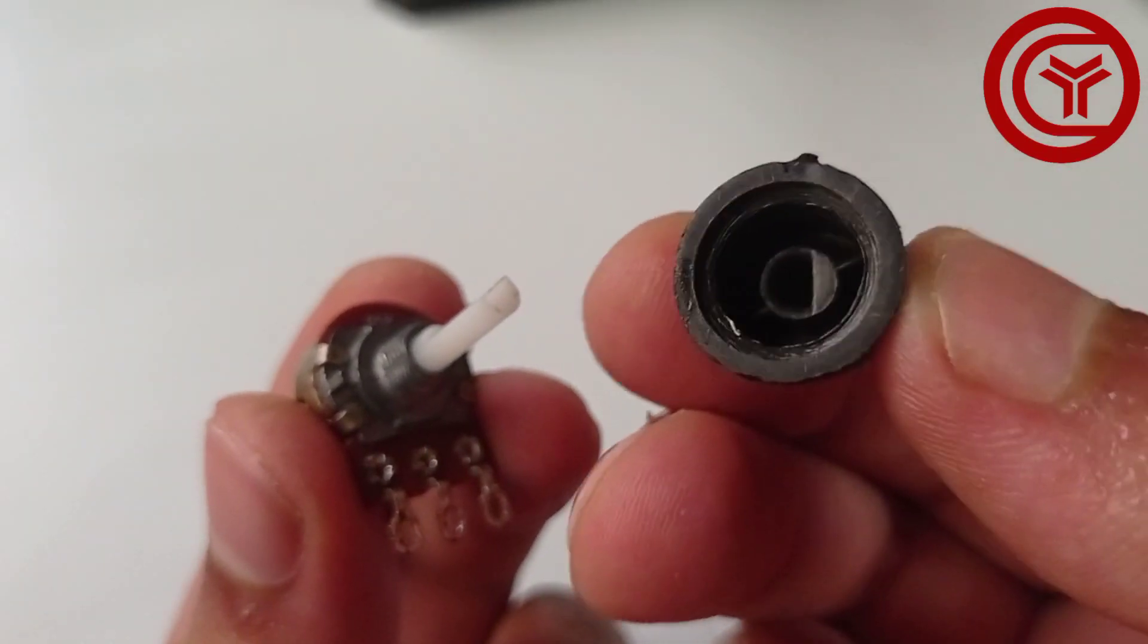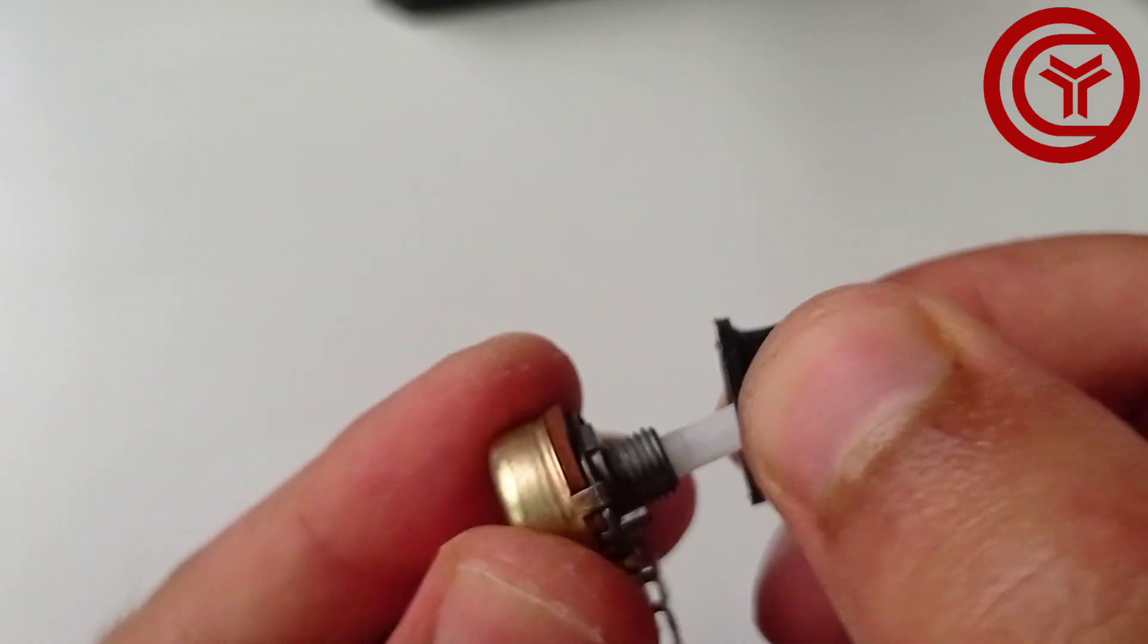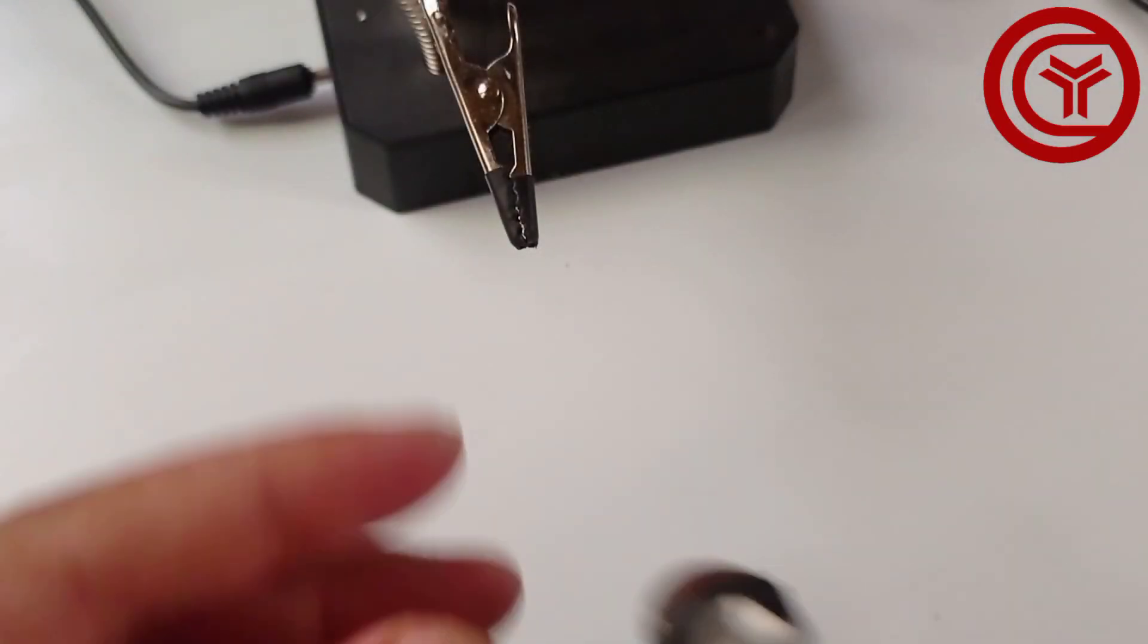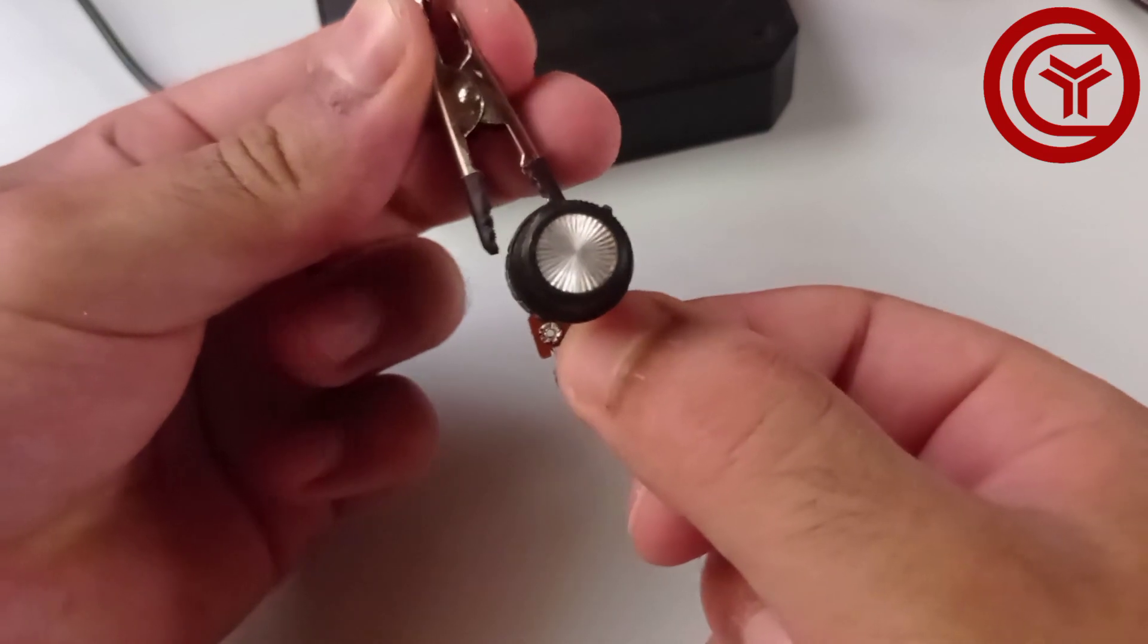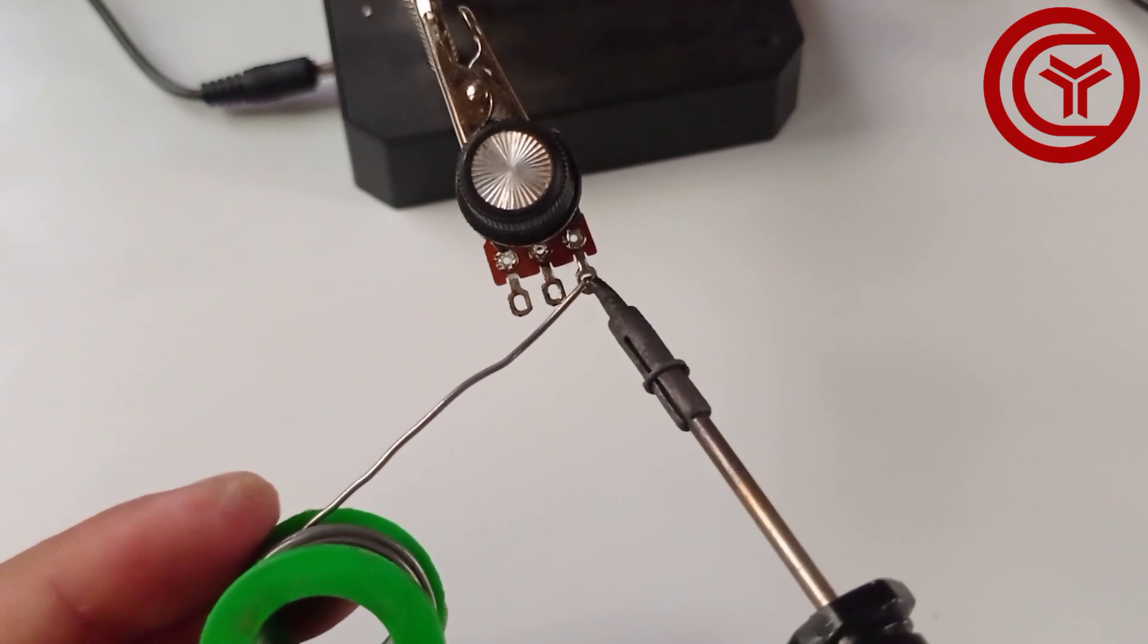And a knob should be used for easy operation. Now let's first solder the pins of the potentiometer.